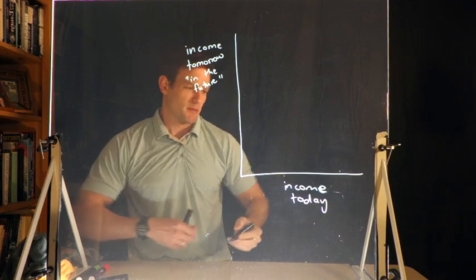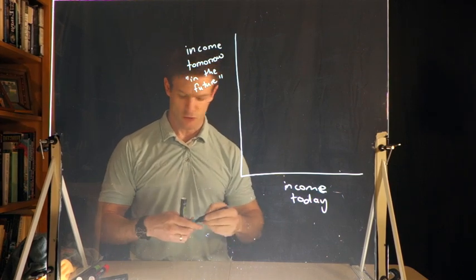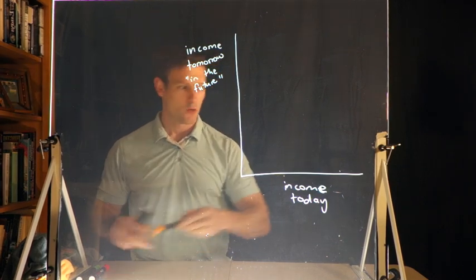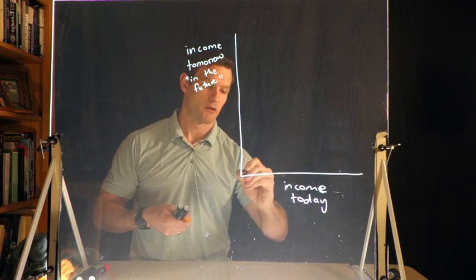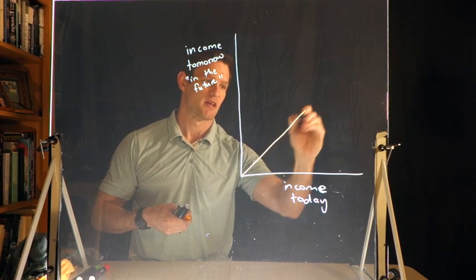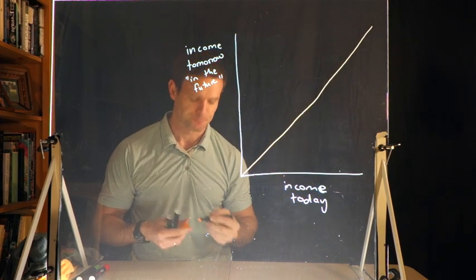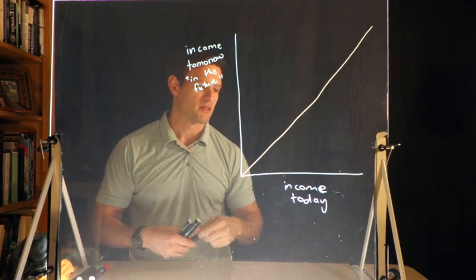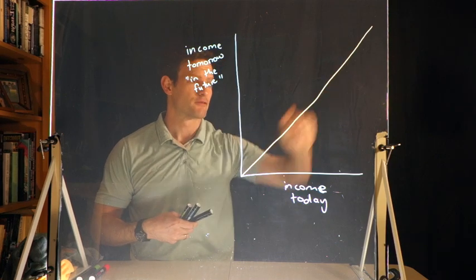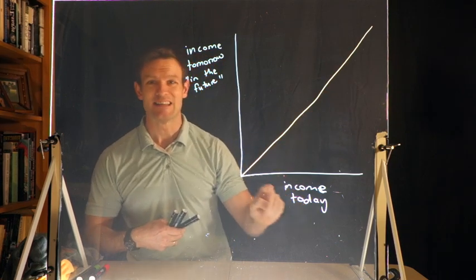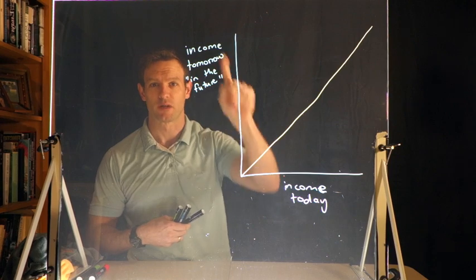The first thing we want to think about is we're going to have a line where income today equals income in the future. That's a 45 degree line, telling us that along that 45 degree line income today equals income tomorrow or income in the future.